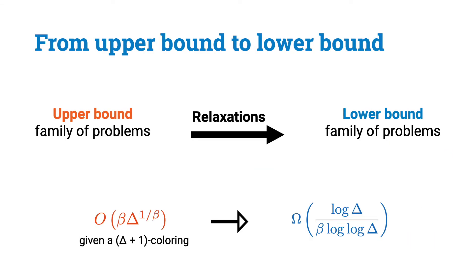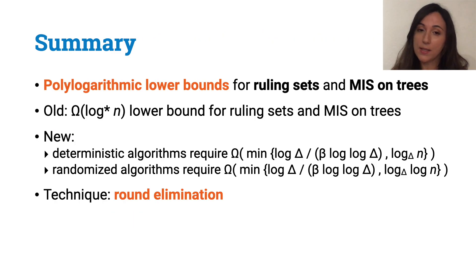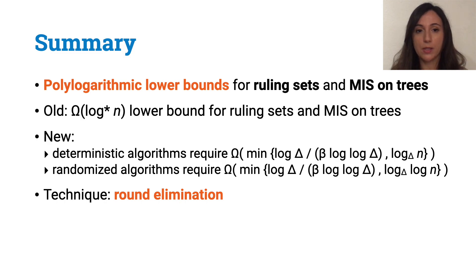Our lower bound sequence of problems is basically obtained by relaxing the problems in our upper bound sequence, so that they satisfy the round elimination constraints for lower bound sequences. We lose precision during this process, and this is why our lower bound does not match our upper bound. To summarize, in this work we provide the first polylogarithmic lower bounds for ruling sets and for MIS on trees, improving on the long-standing omega of log star n lower bound of Linial. To show our results, we make use of the round elimination technique.